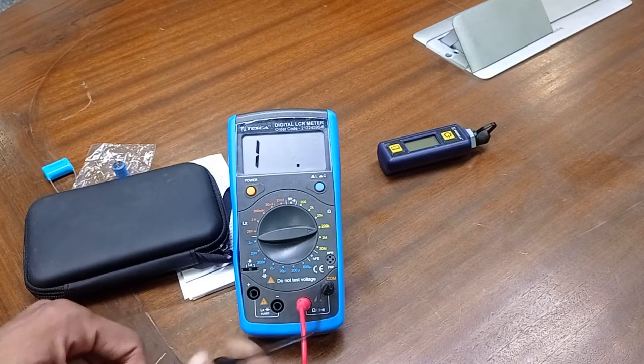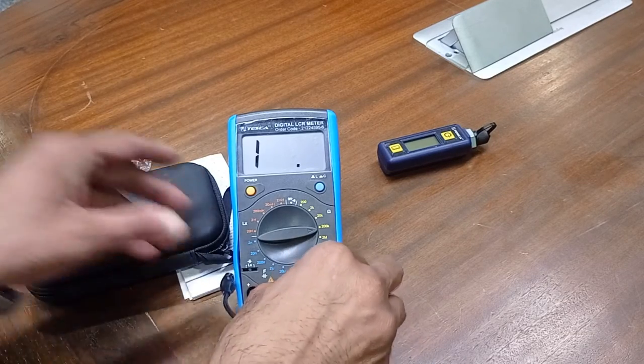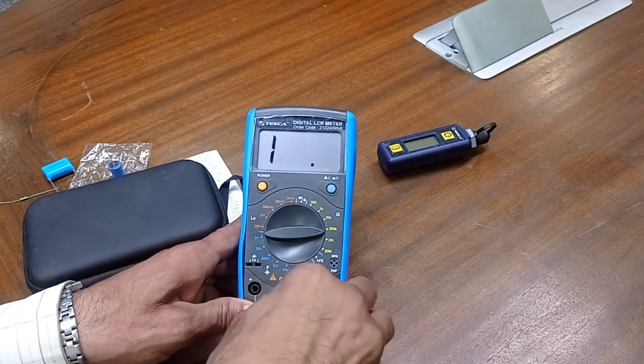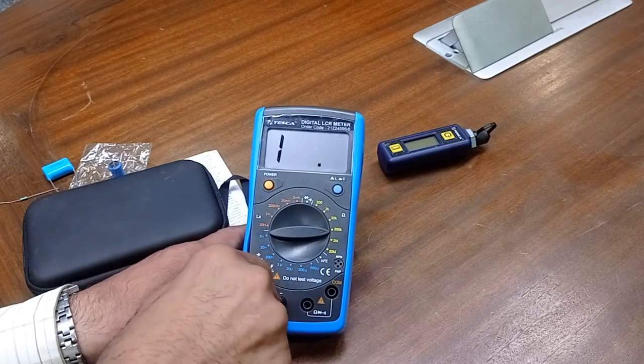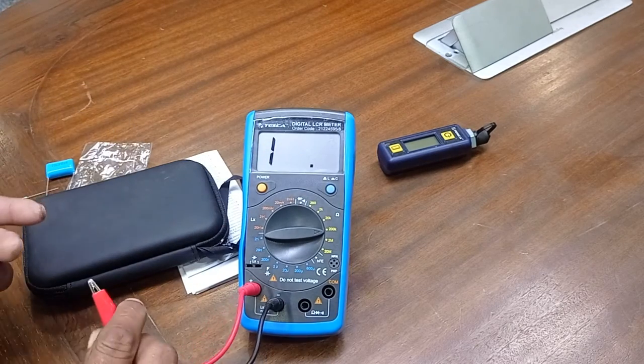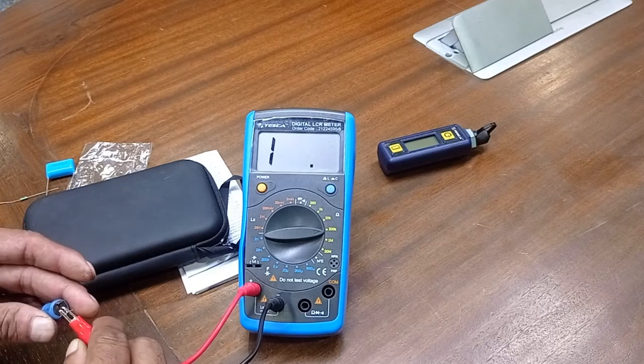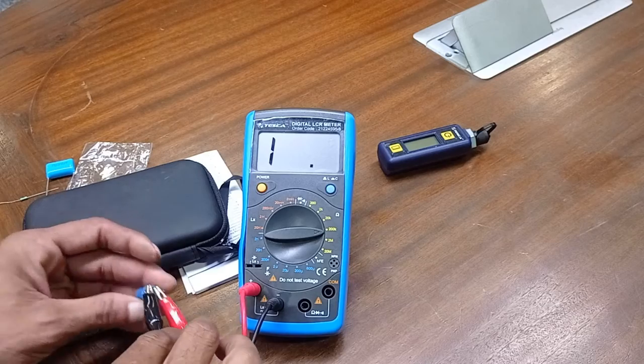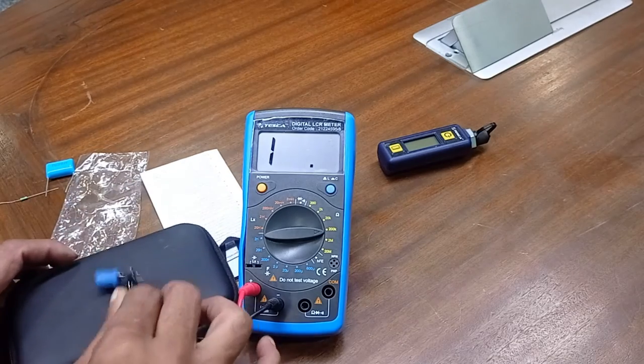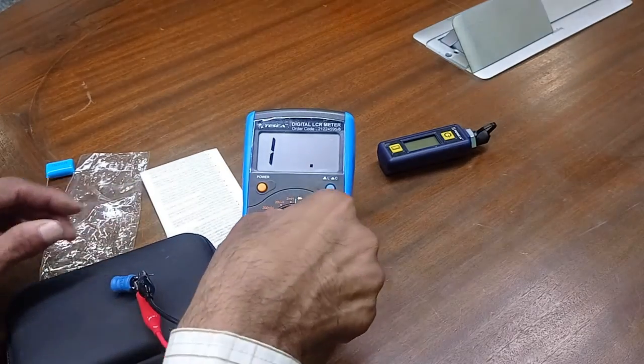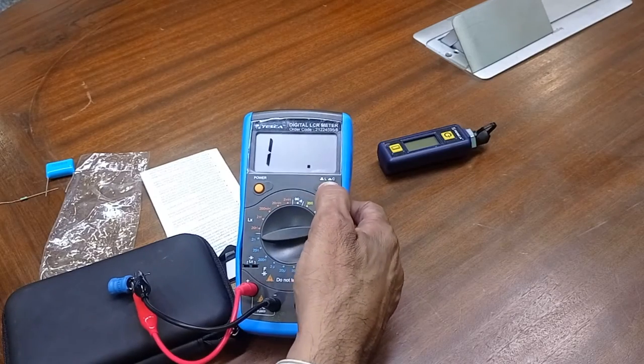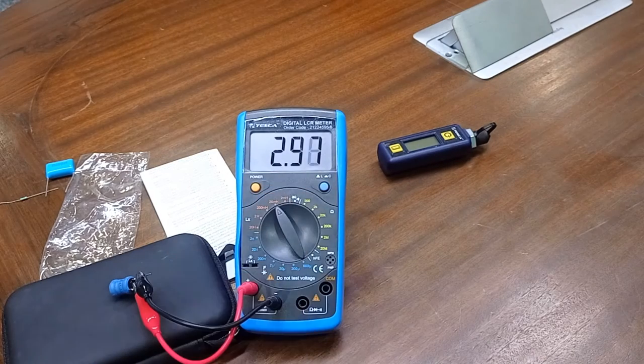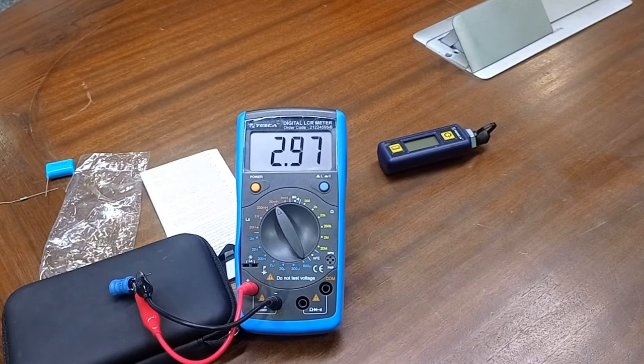Now we have to measure the inductor. We have to connect the leads there and positive leads there. And we have one inductor. We have to connect the leads. We have connected there. Now press and release this. And this is 3 mH.